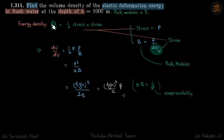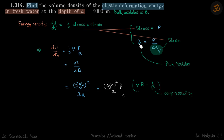We know elastic deformation energy dU/dV is given by half stress times strain. In the context of a liquid, stress is replaced by pressure and strain is replaced by ΔV/V. The ratio between pressure and strain ΔV/V is the bulk modulus B.